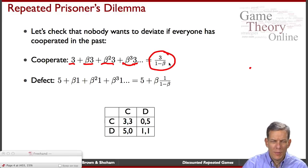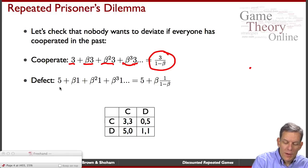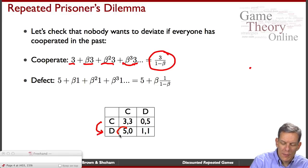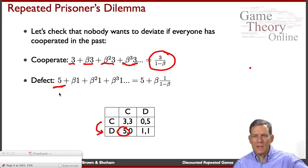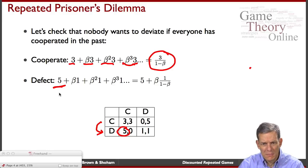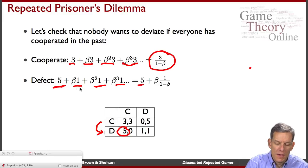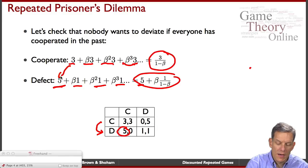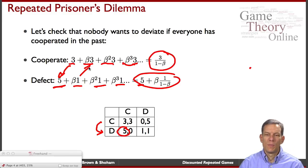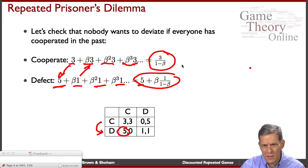What happens if I defect while people are playing this grim trigger strategy? Everybody else is cooperating in the first period, so I get a 5. But then they see that, and in the next period they defect — everybody defects forever after. So I get 5 plus beta times 1 plus beta squared times 1, and so forth. This comes to 5 plus beta over (1 minus beta). So if I deviate, I get a gain in the first period but then lose in subsequent periods — the trade-off depends on the size of the discount factor.